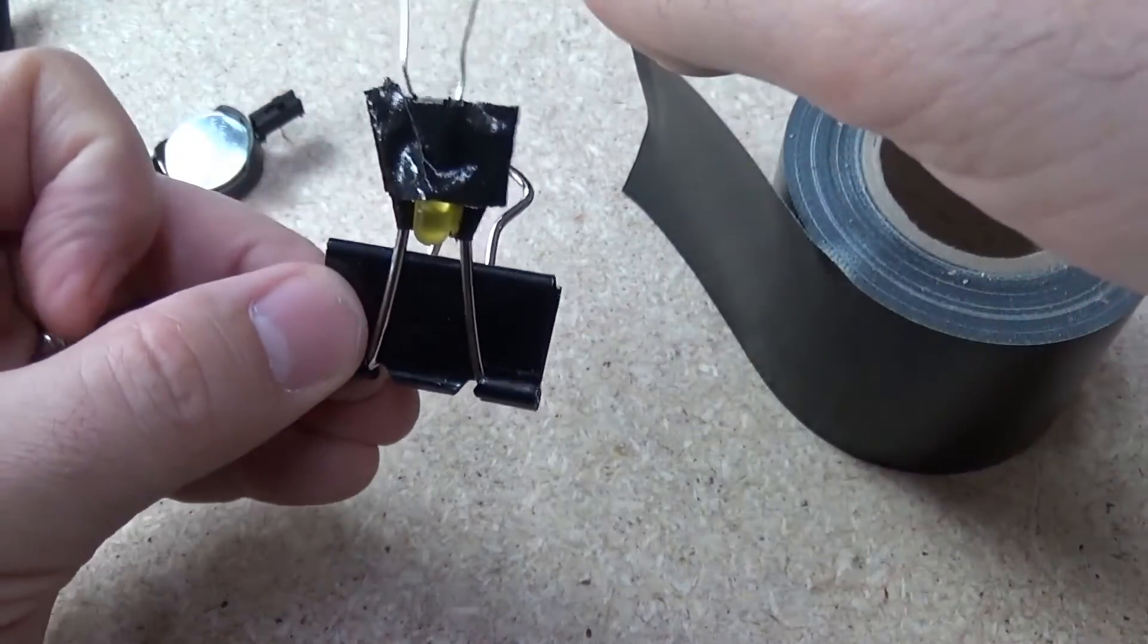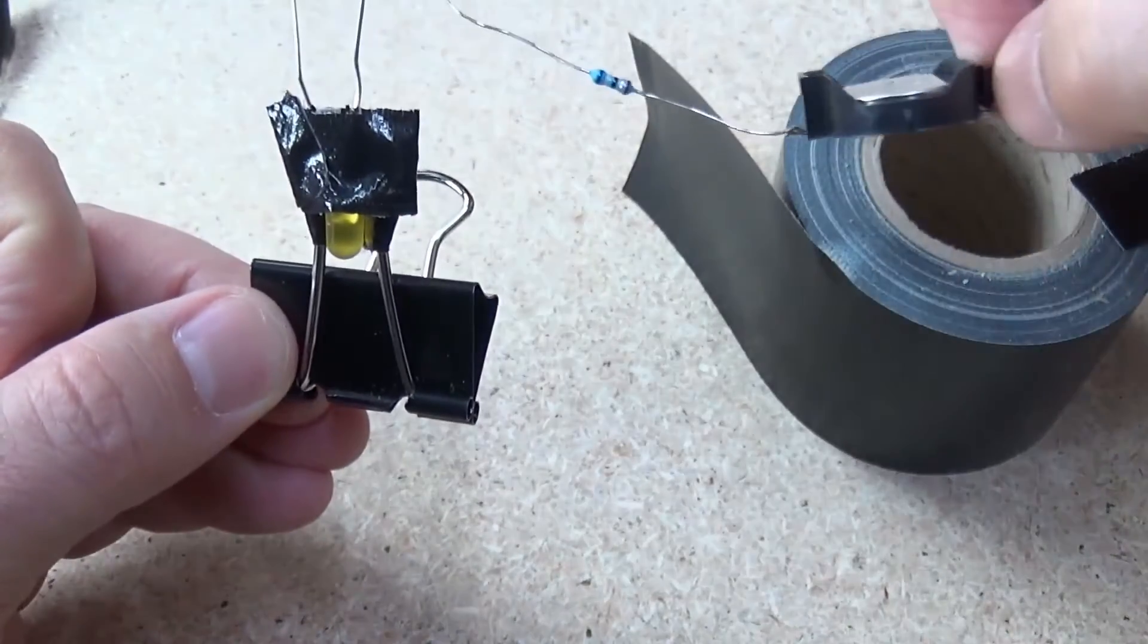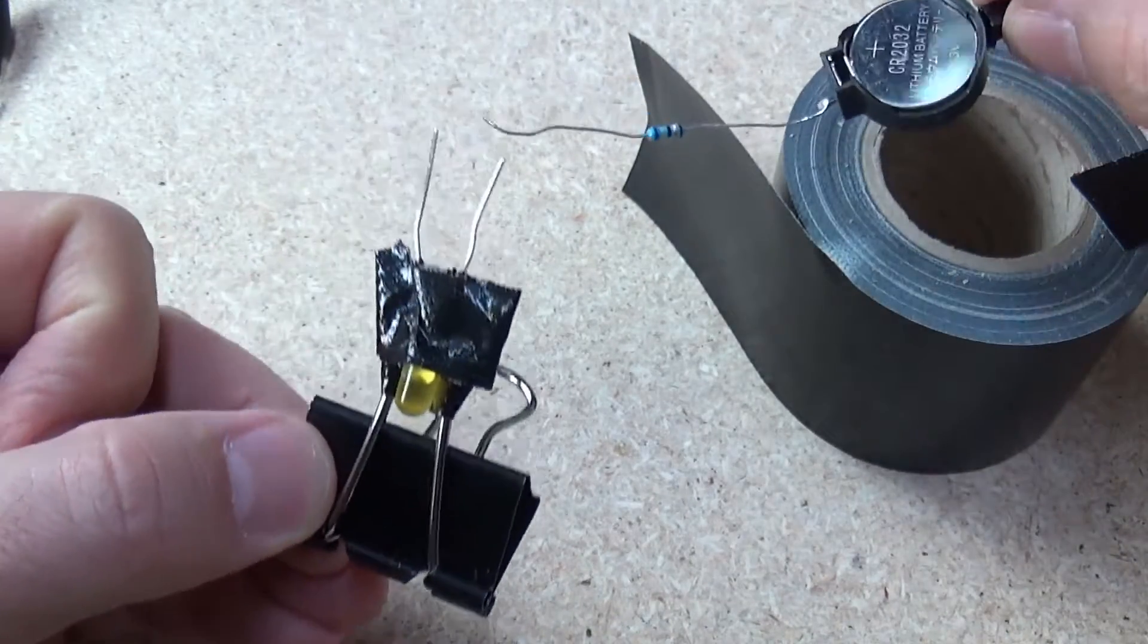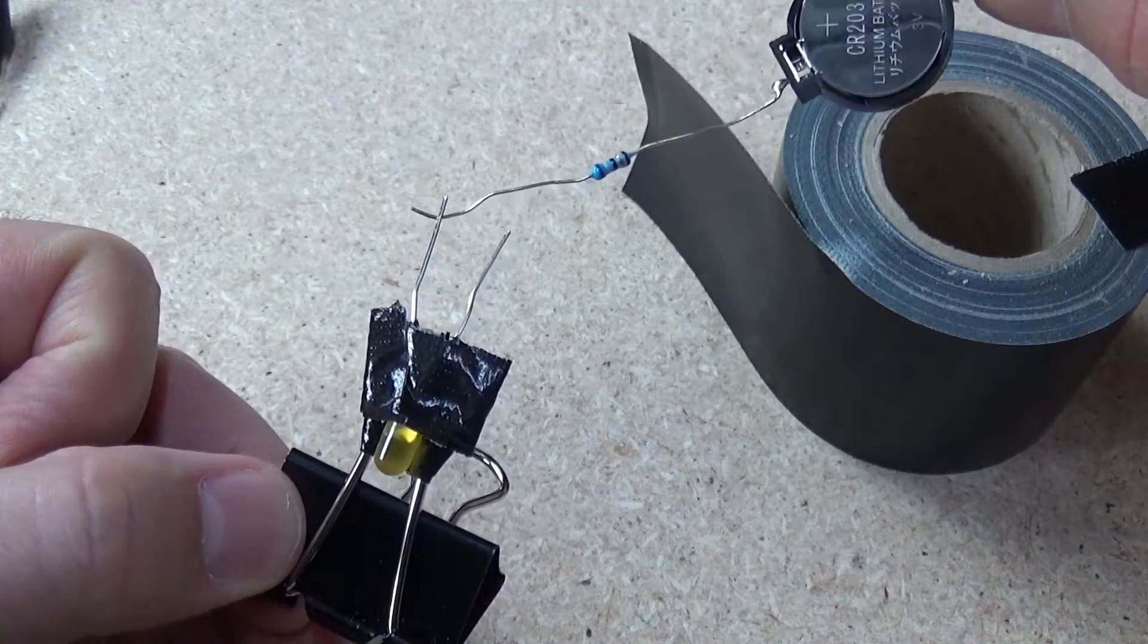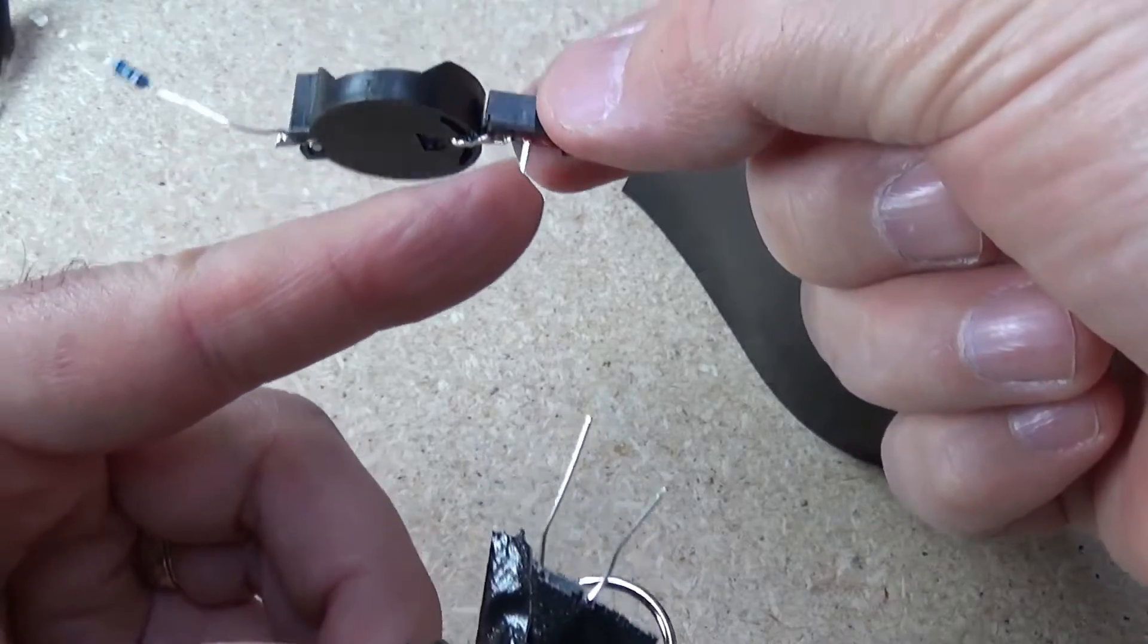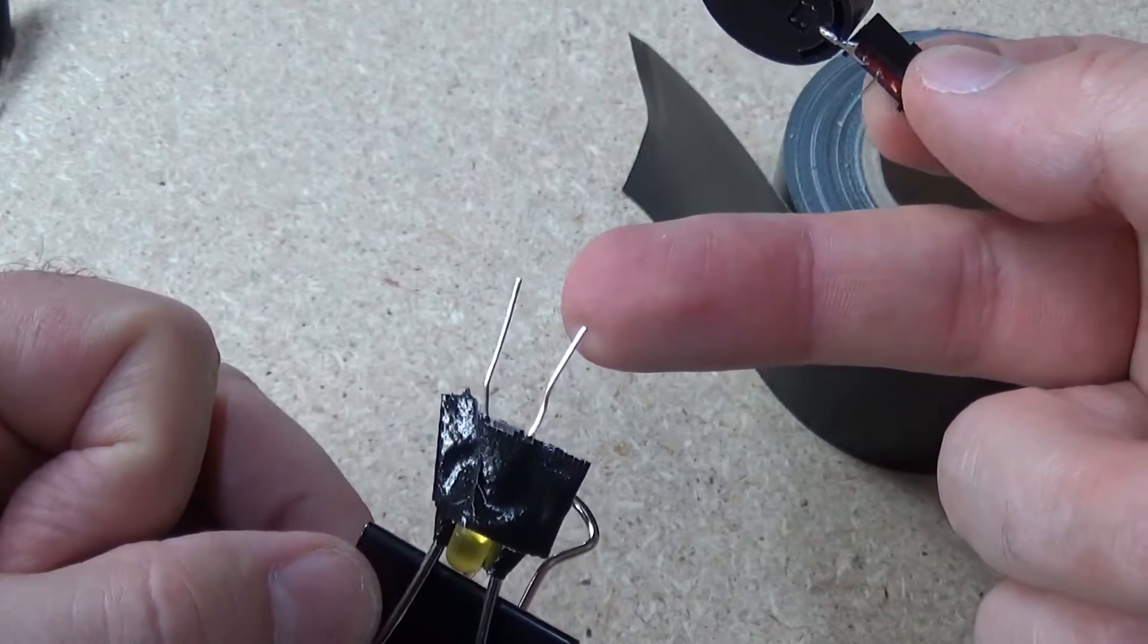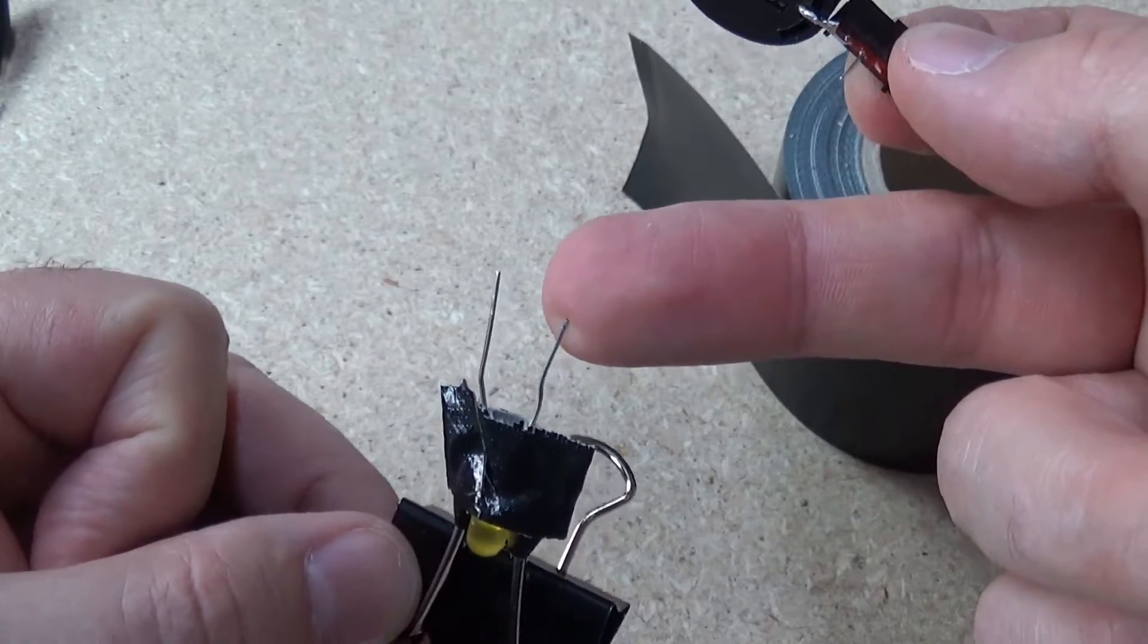So from here, I'm going to attach the other leg of the resistor to the positive leg of the LED and then get a wire to connect from the output of this little switch to the negative leg of the LED and we have a complete circuit.